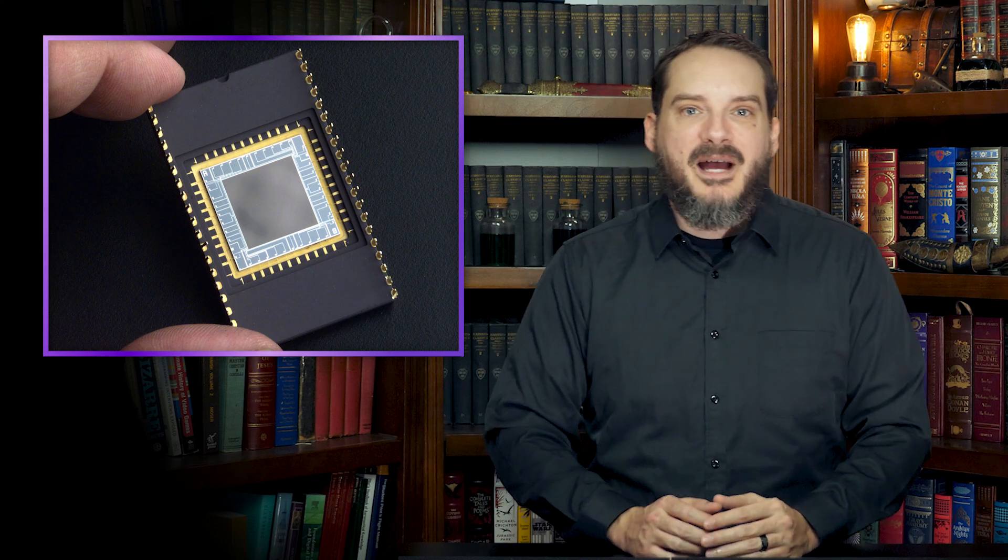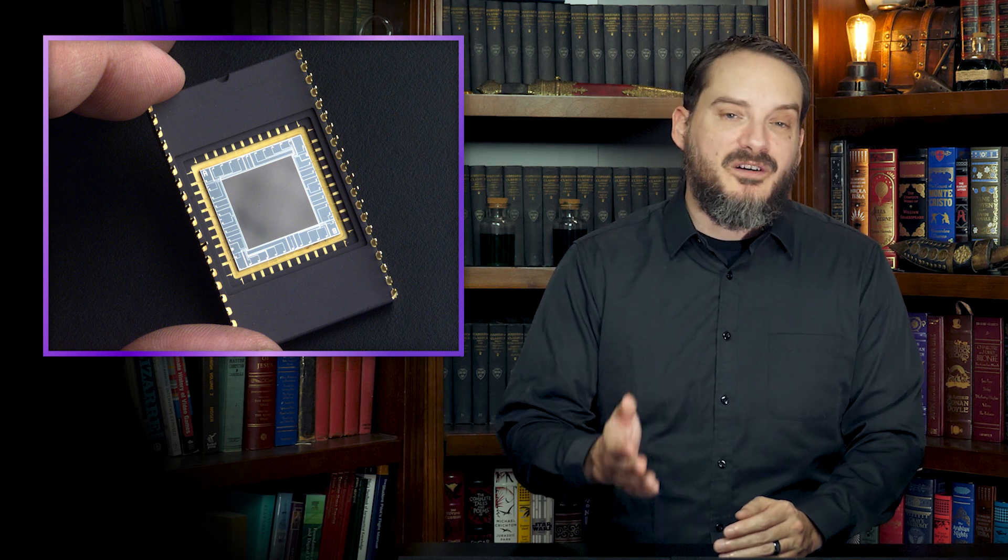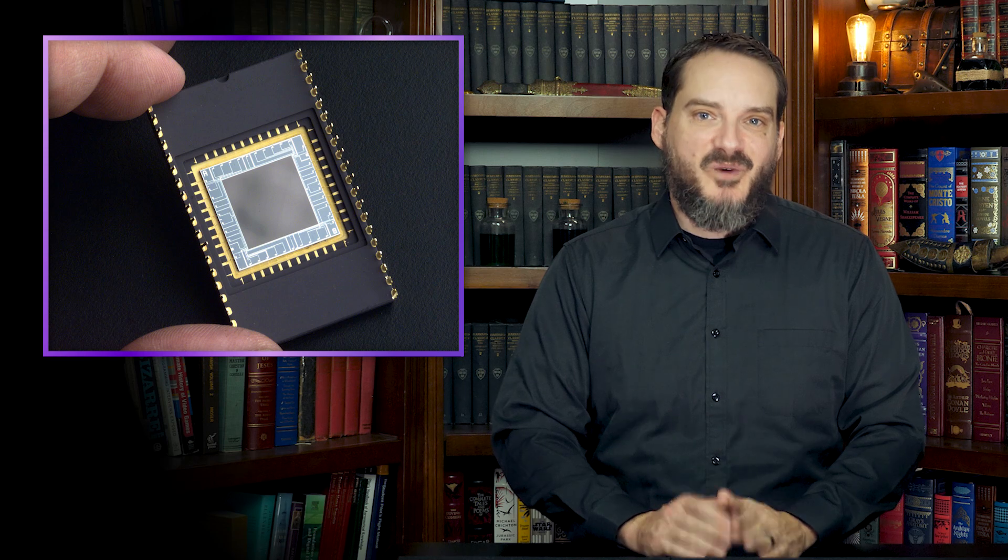Three years later, British engineer Michael Tompsett combined a CCD with a multicolored screen called a Bayer filter to produce the world's first digital color image, a picture of his wife.